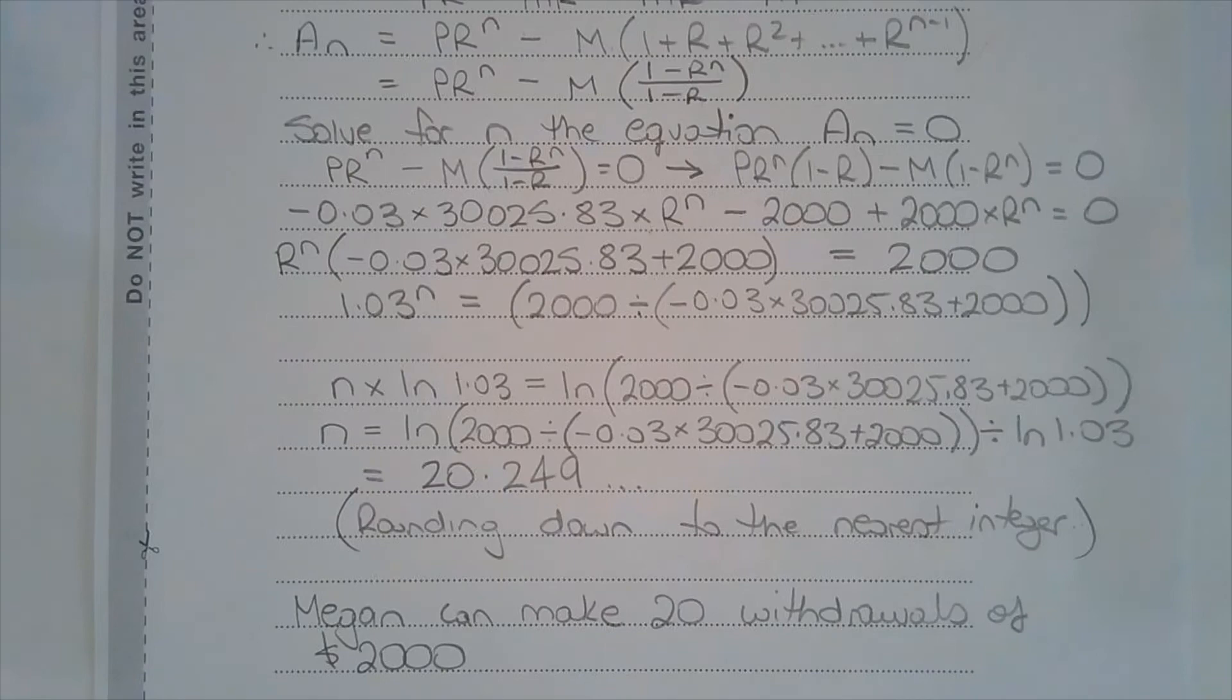In other words, Megan can make 20.249 withdrawals, but that doesn't make any sense. It needs to be an integer, of course. So we're going to round down to the nearest integer. Megan can make 20 whole withdrawals of $2,000.